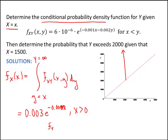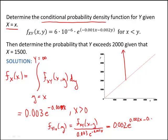So f of y given x is equal to the joint f of xy over the marginal. So this was 0.003 e to the negative 0.003 x. And I went ahead and divided that out, and I get 0.002 e to the 0.002 x minus 0.002 y.